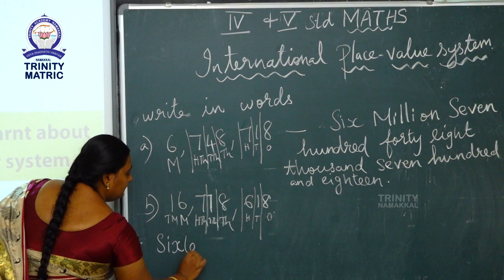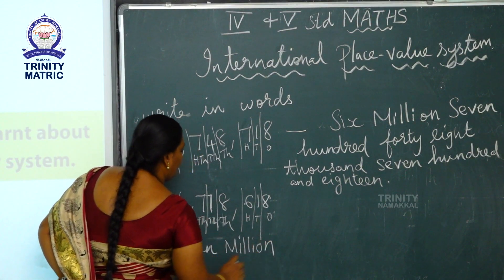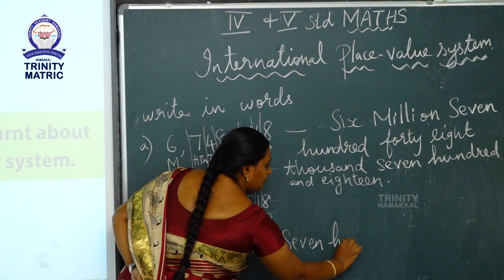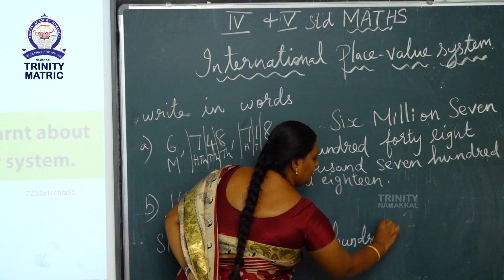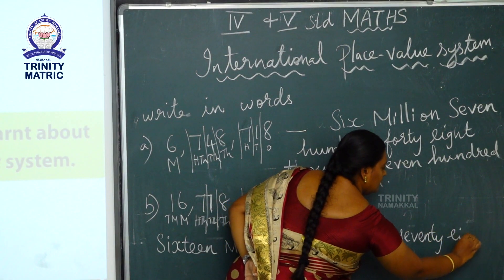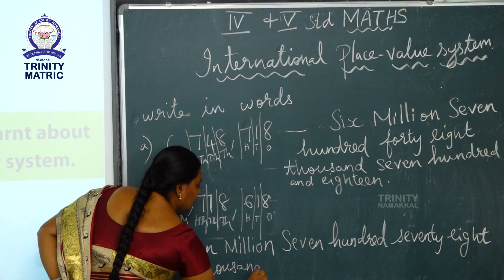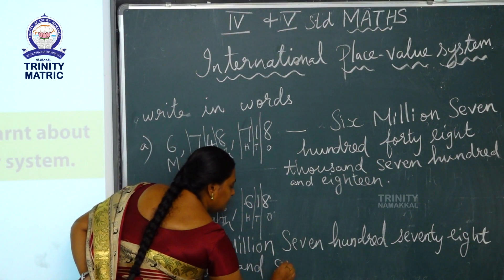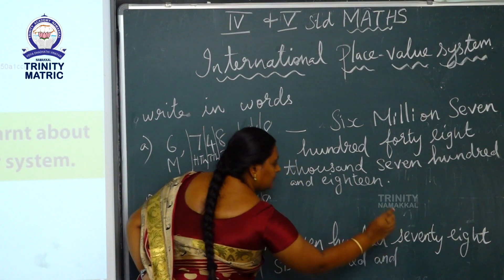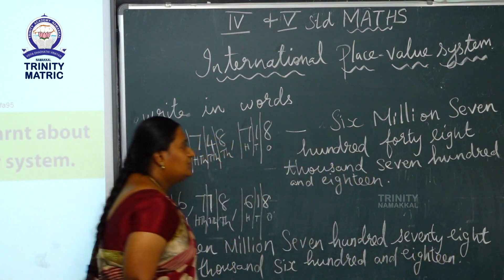So 16,778,000 — and the full number is 16,778,618. That is the complete number name.